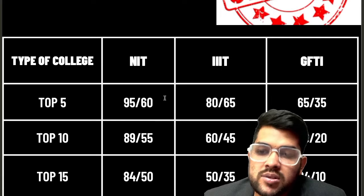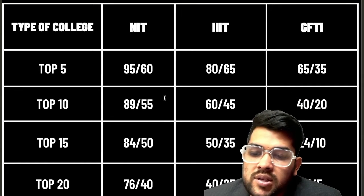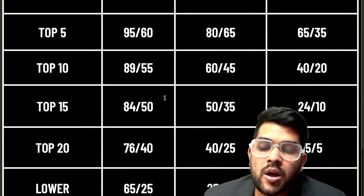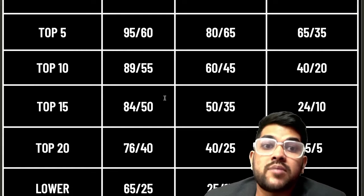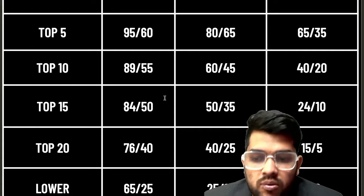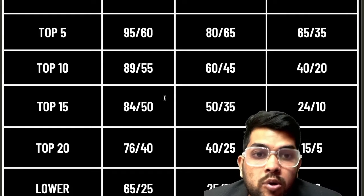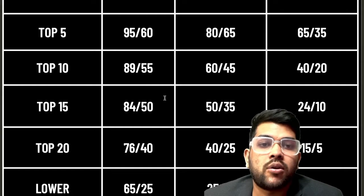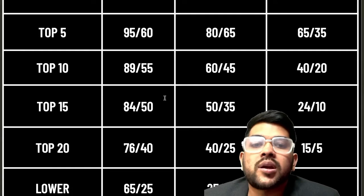For top 15 NITs: 84th and 50th percentile. For Triple ITs: 50th and 35th. For GFTIs: 24th and 10th. For top 20 NITs: 76th and 40th percentile. For Triple ITs: 25th. For GFTIs: 15th and 5th. For lower NITs: 65th percentile for CSE, or even 60th for safer side. For any lower branch in any NIT: 25th percentile — that's why I discussed 25th and 20th percentile earlier. You can get a NIT college with 20th percentile if you do the right counseling process.